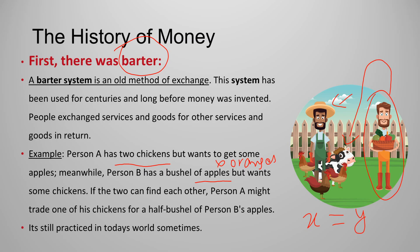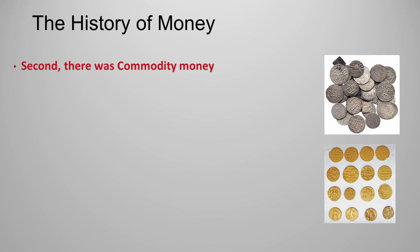Despite its problems, barter is still practiced today in some parts of the world. It occurs in international trade and even between individuals. For example, if you give your cell phone to another person and that person gives you a laptop in return, that is a kind of barter — only goods are being exchanged with nothing else involved.